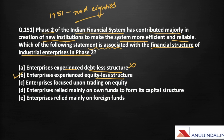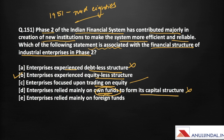Option C says that enterprises focus upon trading on equity. Trading on equity means balancing the debt and equity components in the capital structure based on the consequences of each — debt is associated with interest charges but is cheaper than equity. More debt causes problems for equity shareholders, while more equity is expensive for a firm since debt is a cheaper source of capital. Enterprises did not focus on own funds either, as they relied on debt.